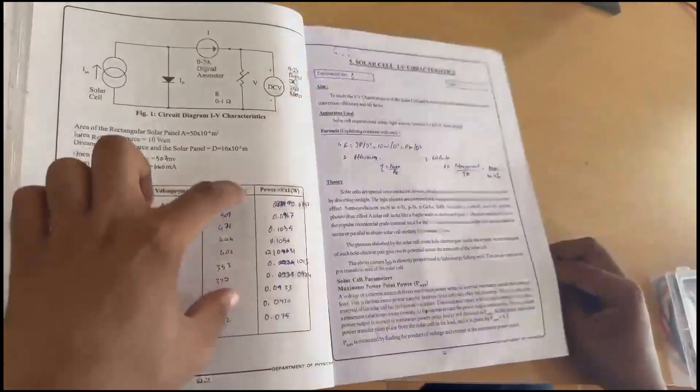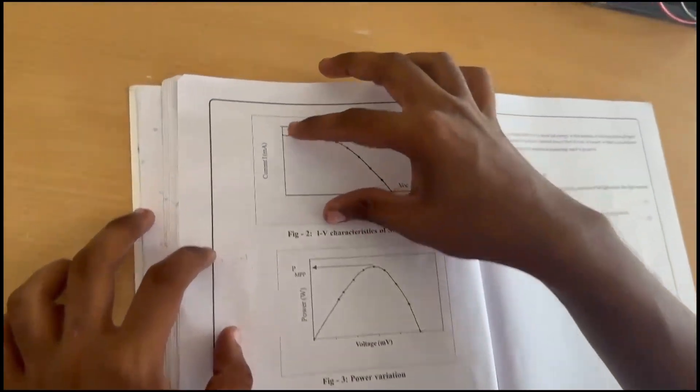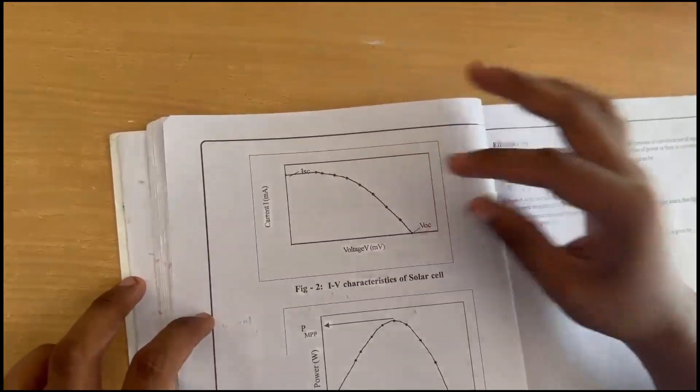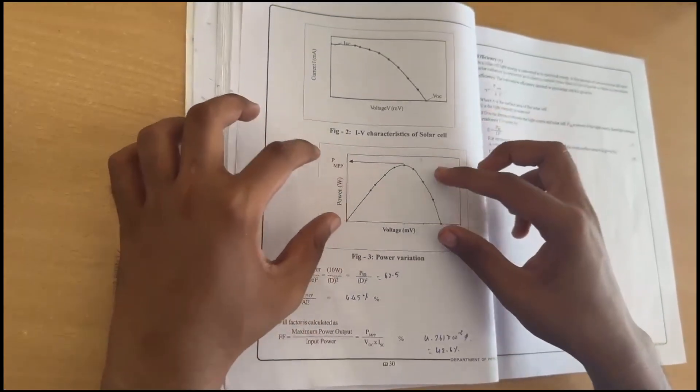These are the power, voltage, and current values. Use the voltage and current values to plot the VI characteristics graph. Then use the power and voltage to plot the power variation.